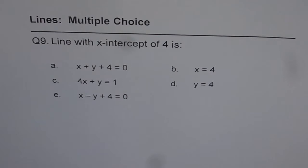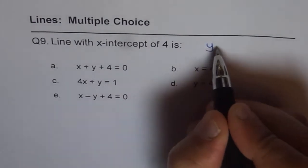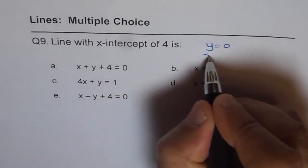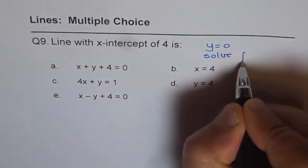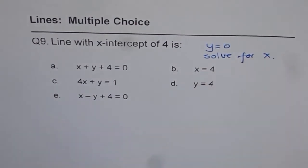We have to place y equals to 0 and solve for x. So you need to put y equals to 0 and then solve for x. That is how we normally find the x-intercept.